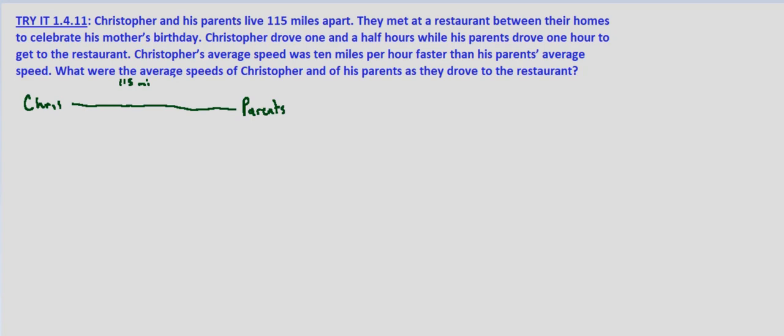While his parents drove one hour to get to the restaurant, Christopher's average speed was 10 miles per hour faster than his parents' average speed, and we're asked to find the average speed of both his parents and Christopher as they drove to the restaurant. Well, first off we know that Chris is going to have driven further because he's going faster and he drove longer, so we'll call this where the restaurant is. We know that Chris was 10 miles per hour faster.